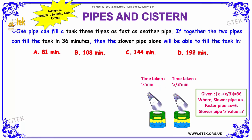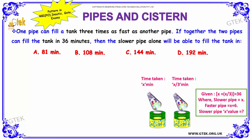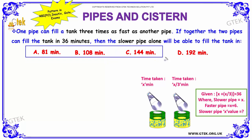One pipe can fill a tank three times as fast as the other pipe. If together the two pipes can fill the tank in 36 minutes, then the slower pipe alone will be able to fill the tank in how many minutes? Our options are: 81 minutes, 108 minutes, 144 minutes, and 192 minutes.